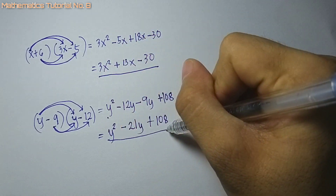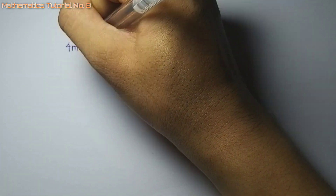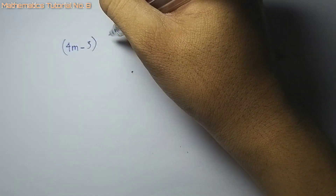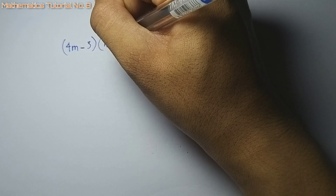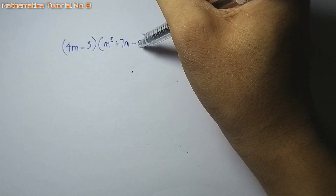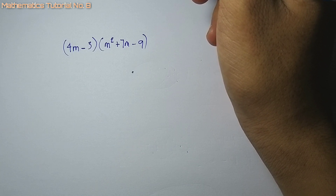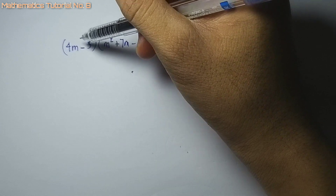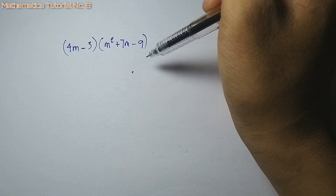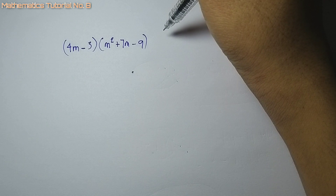So this time let's try nga ang atong pikas polynomial kay duha na terms. Let's try: 4m minus 3 multiply sa m squared plus 7m minus 9. Duha ang terms sa first polynomial, tulo sa picas. Wala mabago sa rule — ang tanang terms dini sa pikas polynomial dapat ma-multiply sa tanang terms pod diri sa pikas.